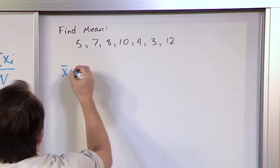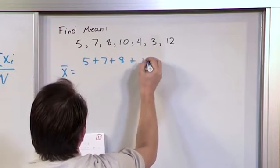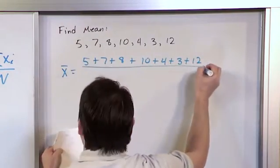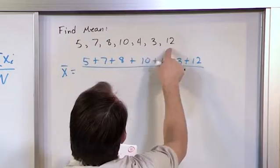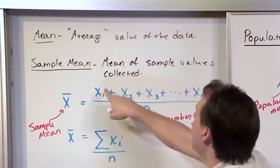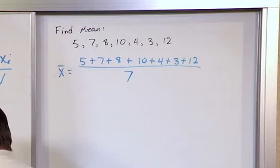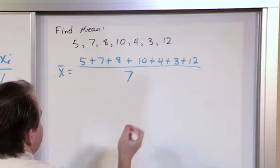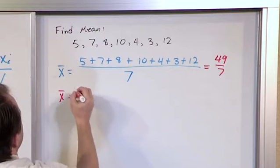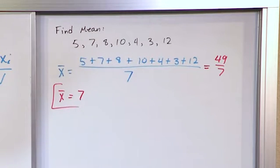So we will say that x-bar, which is our sample mean, we're going to add all these guys up: 5 plus 7 plus 8 plus 10 plus 4 plus 3 plus 12. And then we're going to divide the whole thing by 1, 2, 3, 4, 5, 6, 7 values here. This is exactly what the sample mean says — we add up all of the values and divide by the number of samples. So when we do this, what we're going to get is 49 over 7. So x-bar is 7. This is the sample mean of this set of samples.